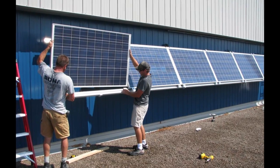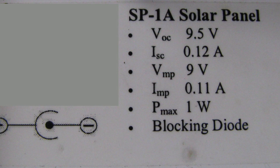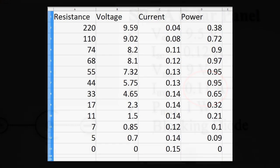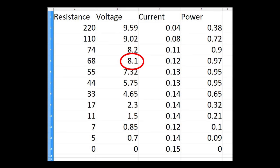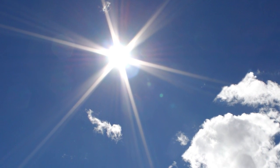Load balancing is a critical consideration when designing solar arrays. Most solar panels include a spec sheet. The manufacturer claims that voltage at maximum power, VMP, is 9 volts, and current at maximum power, IMP, is 0.11 amps. Looking at our data, we calculated VMP to be 8.1 volts and IMP to be 0.12 amps — close to the manufacturer's ratings. The manufacturer's data is based on a standard solar radiation value of 1000 watts per square meter, and solar radiation on the day I collected data was below this standard, resulting in slightly different values.